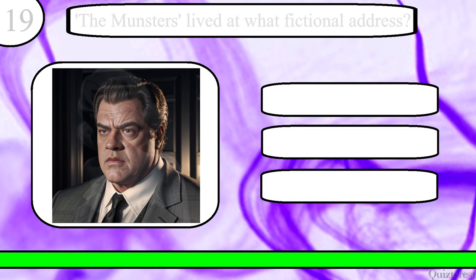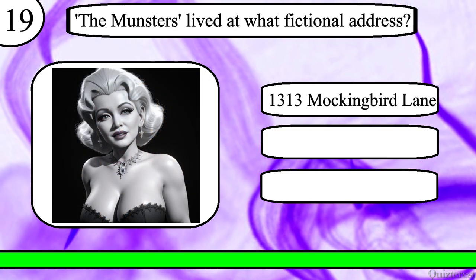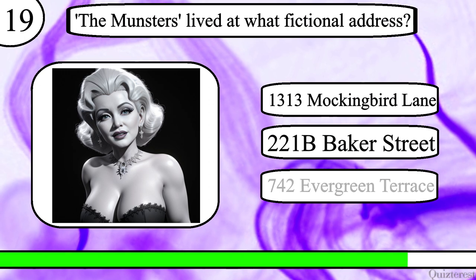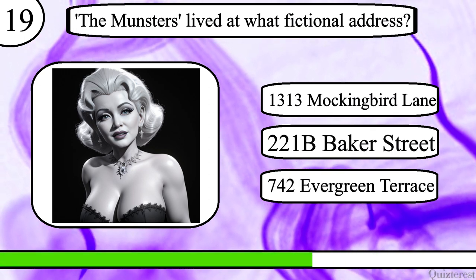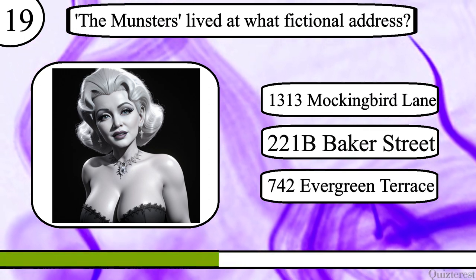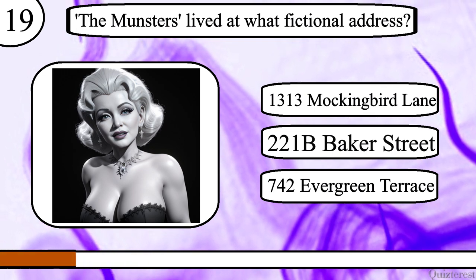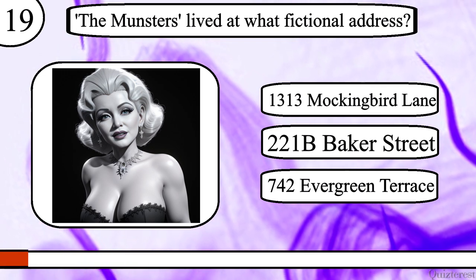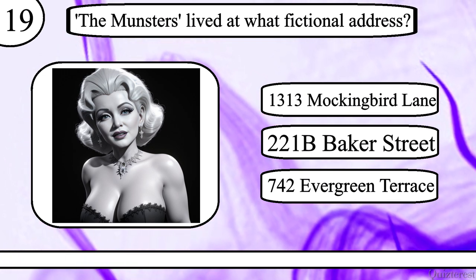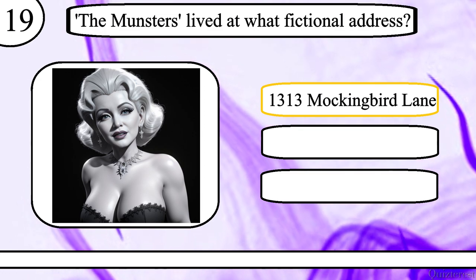Question 19. The Munsters lived at what fictional address? 1313 Mockingbird Lane, 221B Baker Street or 742 Evergreen Terrace? The correct answer is 1313 Mockingbird Lane.